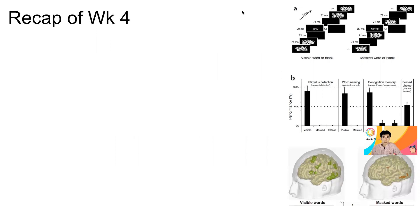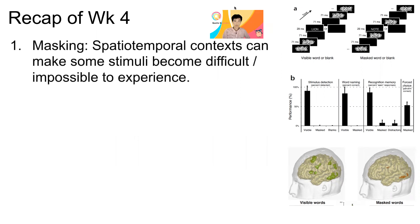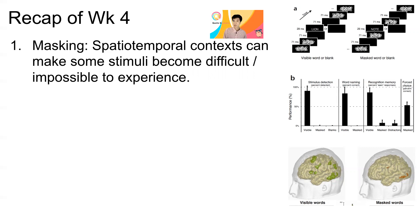Let's get started with a recap of last week. In week four, we learned about masking in the first part of the lecture. Masking is the spatiotemporal context that alters the appearance of some stimuli, making it difficult or impossible to experience. This is the sandwich masking that Stan the Hen used — on the left side, because of the blank before and after the target letters, you can see it very clearly. But if it's sandwiched by the jumbled mask temporarily, you cannot see the masked letter very well.